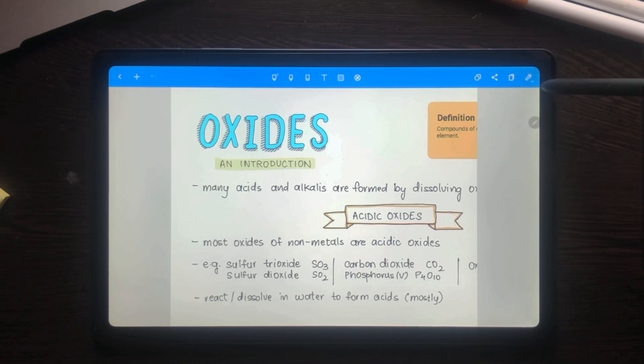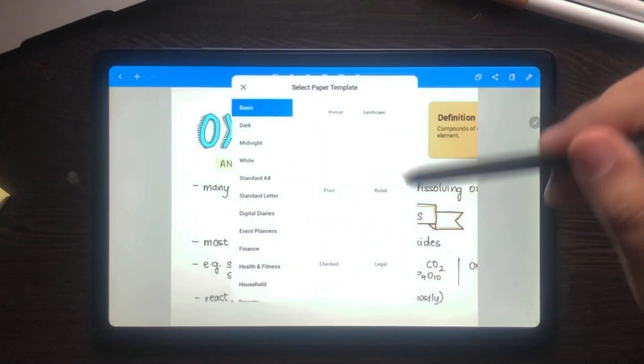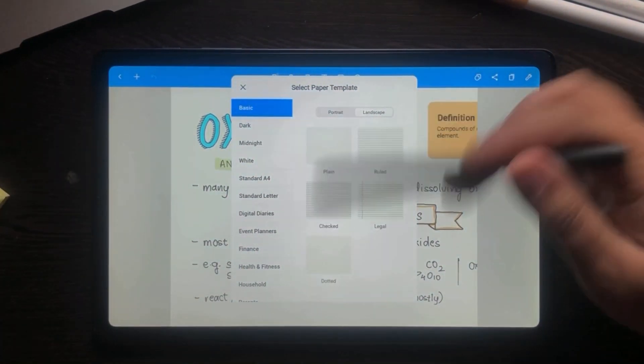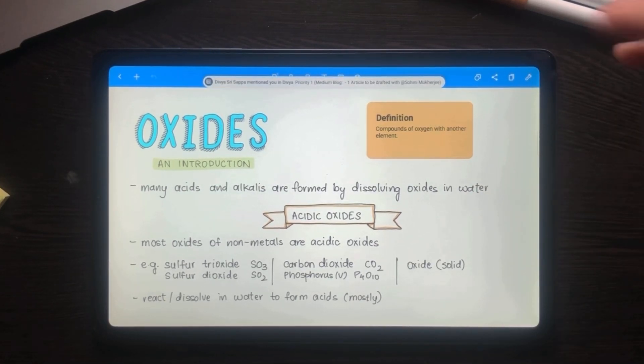I just go back to the original page template I had. I remember it being basic landscape and plain, so there I have all my notes back. It's right there, I did not lose any of it.